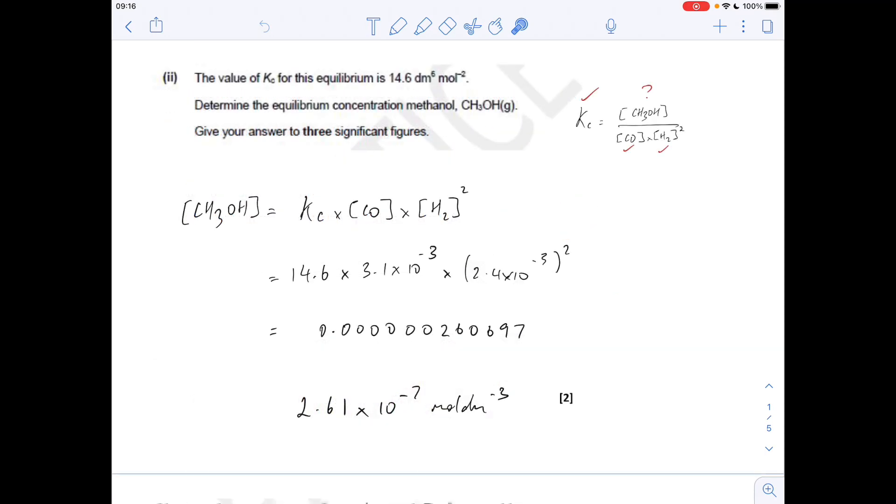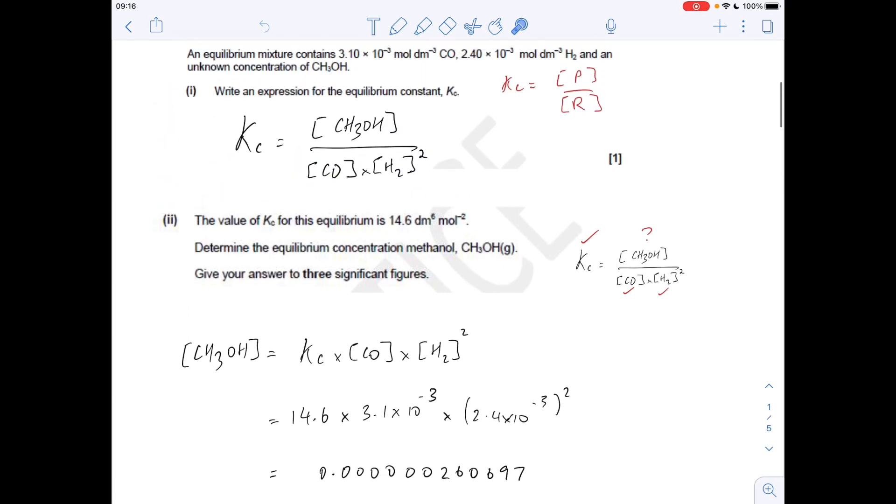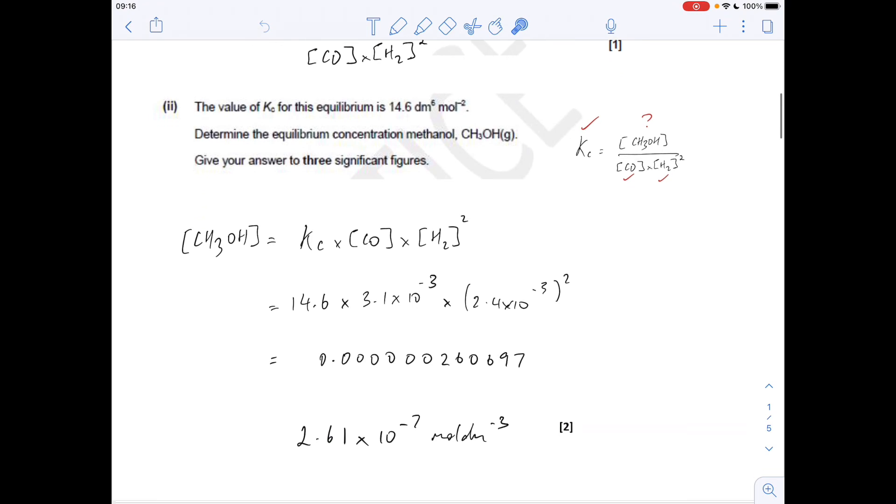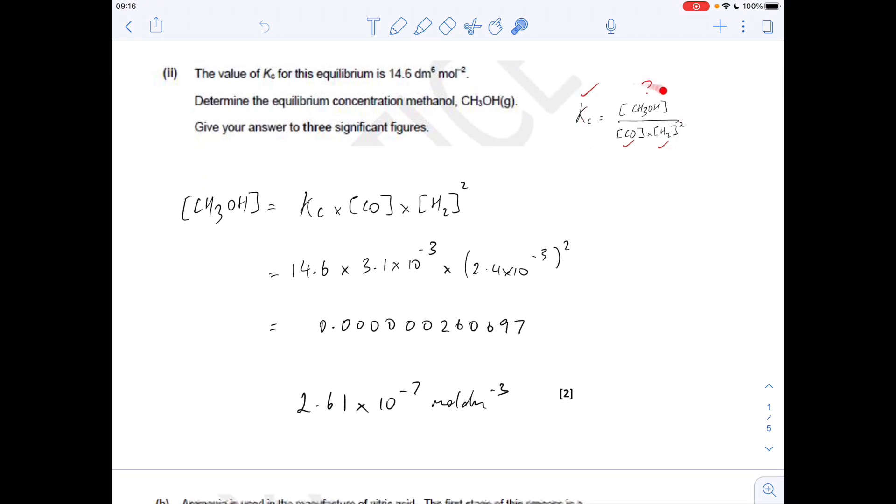Part two is a calculation. So we're given the Kc for the equilibrium, and we are given the concentrations at equilibrium of the CO and the hydrogen. We've got to find the methanol's equilibrium concentration, and that answer has to be given to three significant figures. So there's the Kc expression again. We just need to rearrange to get this on its own. Then we plug the numbers in, remember you need to square that one. You get that calculated value there. To three significant figures, I'm putting it in standard form: 2.61 times 10 to the minus 7 moles per decimeter cubed.